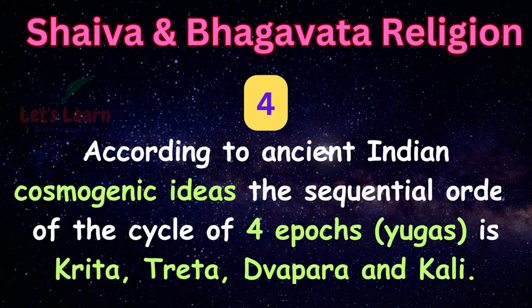According to ancient Indian cosmogenic ideas, the sequential order of the cycle of four epochs — Yugas — is Krita, Tretha, Dvapara and Kali.